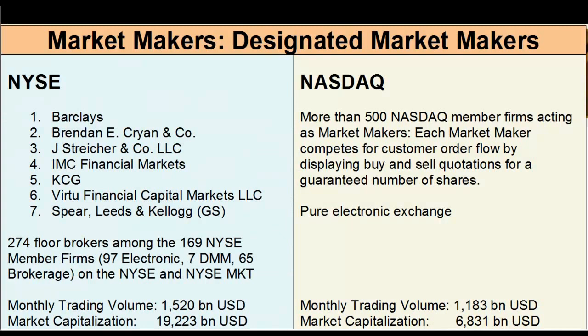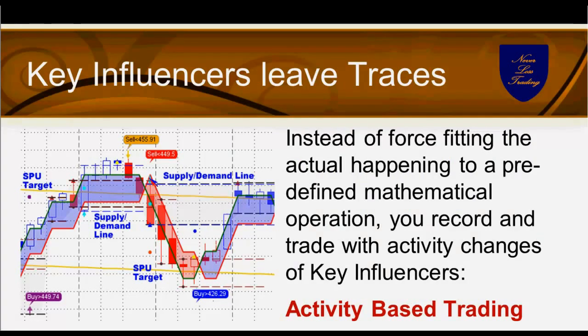A quick overview of market makers: the NYSE has seven powerful companies controlling the entire market, while on the Nasdaq you have more than 500 members acting as market makers offering at the bid and ask side. The NYSE has much higher influence from a few companies compared to the Nasdaq's more open market strategy. All the interaction of these influences leaves a trace, and we can find based on our math where to buy and sell — 'buy me and sell me out here' because that's the minimum movement expected. The dot on the chart is your first SPOO target.